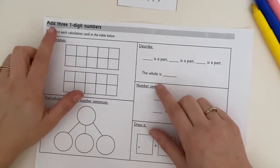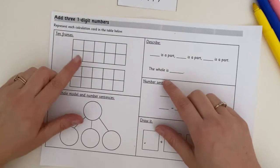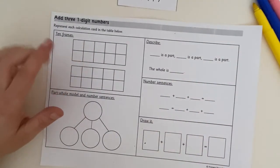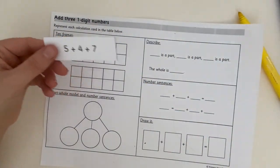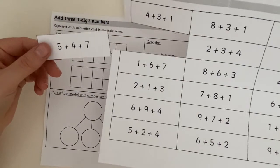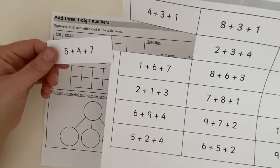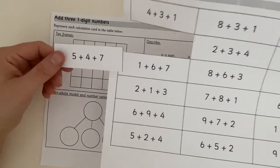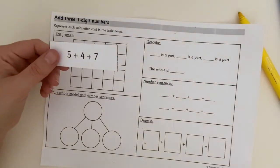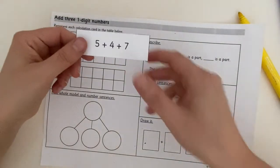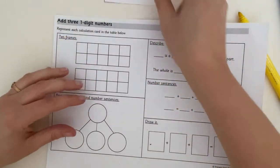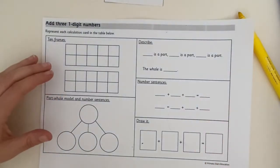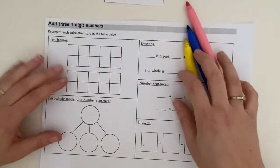We're going to have a look at how to add three-digit numbers. Now first of all, what we need is a number sentence. I have cut mine out of this sheet here. You don't have to print it out and cut it though, you can just have a look on the screen and choose a number sentence, or you can make up your own. My number sentence here is 5 add 4 add 7.